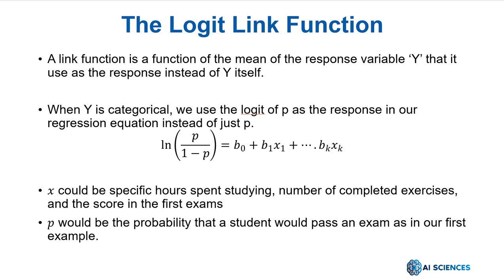p is the probability that y equals 1. So, for instance, those x's could be specific hours spent studying, number of completed exercises, and the score in the first exams, while p would be the probability that a student would pass an exam, as in our first example.